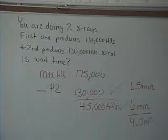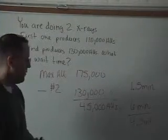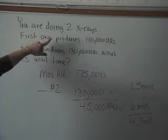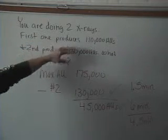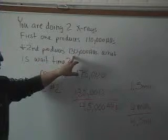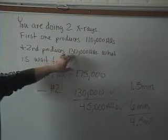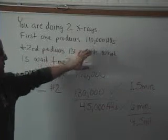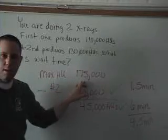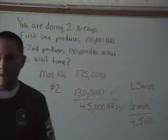This is an example of calculating the amount of time you wait from one x-ray to the other. You're doing two x-rays: one produces 110,000 heat units, the other produces 130,000 heat units. What is the wait time? The first thing you do is add these two together and see if they're more than the maximum. The maximum on the chart on page 81 is 175,000 heat units.